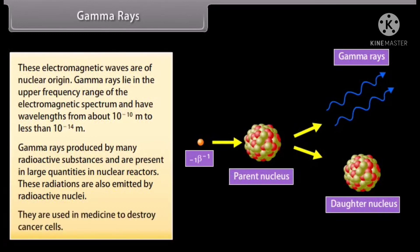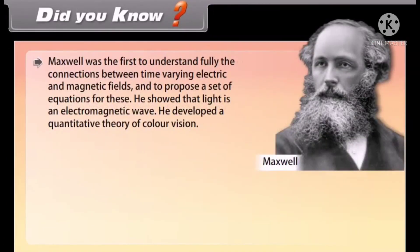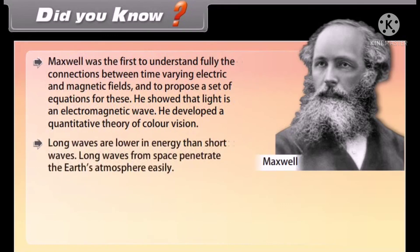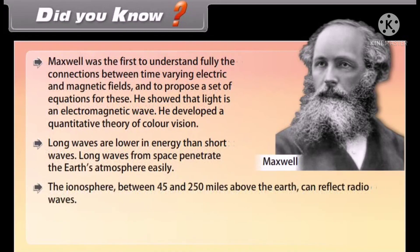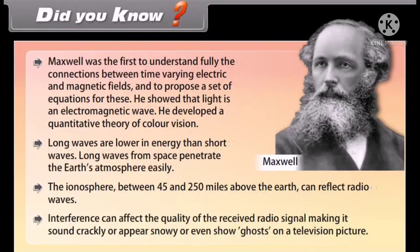Did you know: Maxwell was the first to understand fully the connections between time varying electric and magnetic fields and to propose a set of equations for these. He showed that light is an electromagnetic wave. He developed a quantitative theory of color vision. Long waves are lower in energy than short waves. Long waves from space penetrate the earth's atmosphere easily. The ionosphere between 45 and 250 miles above the earth can reflect radio waves. Interference can affect the quality of the received radio signal making it sound crackly or appear snowy or even show ghosts on a television picture.